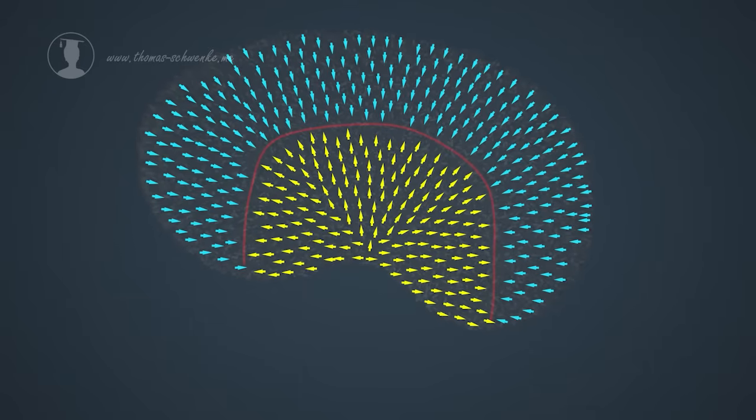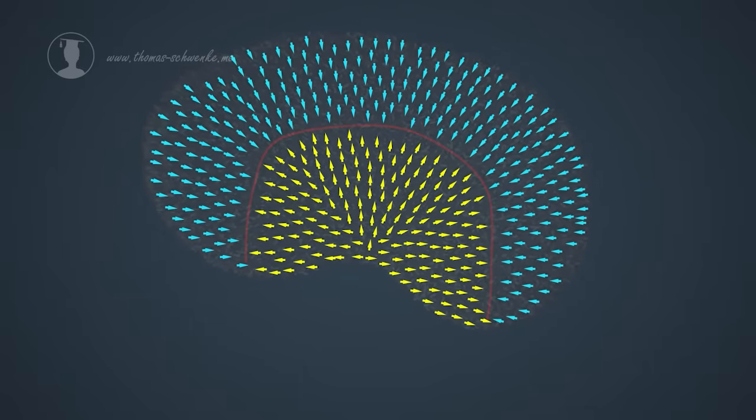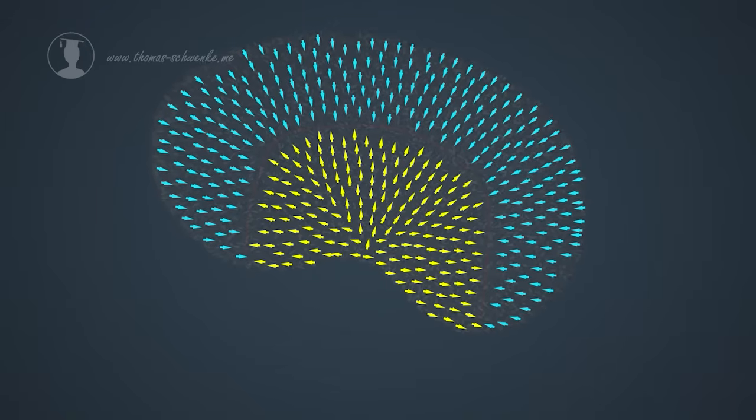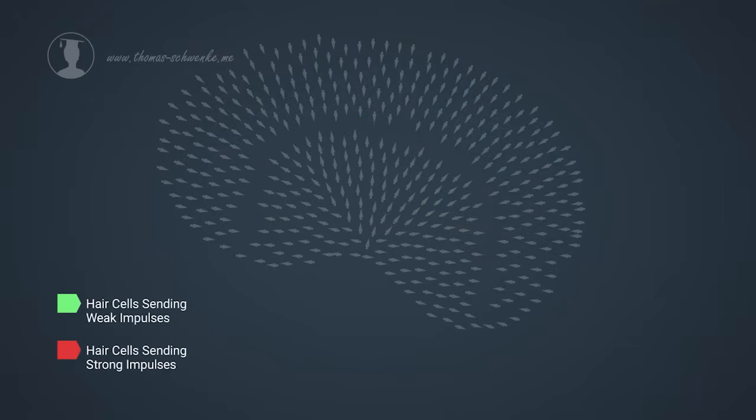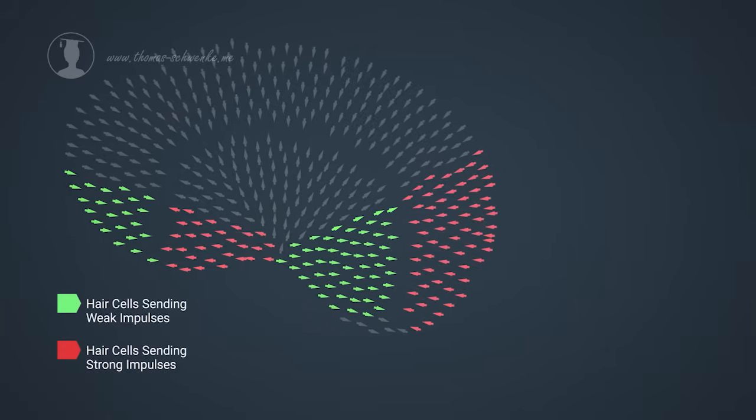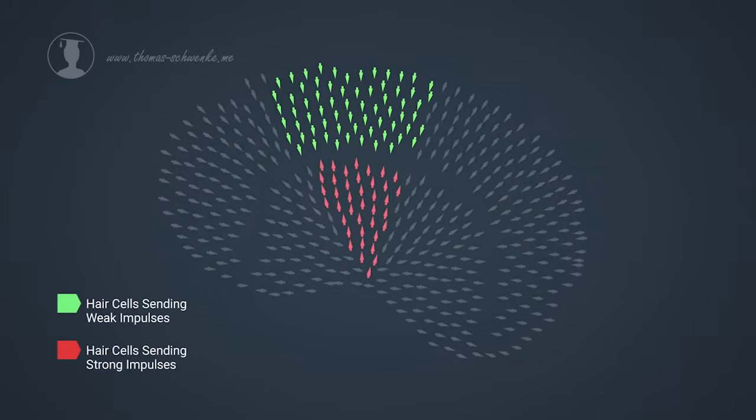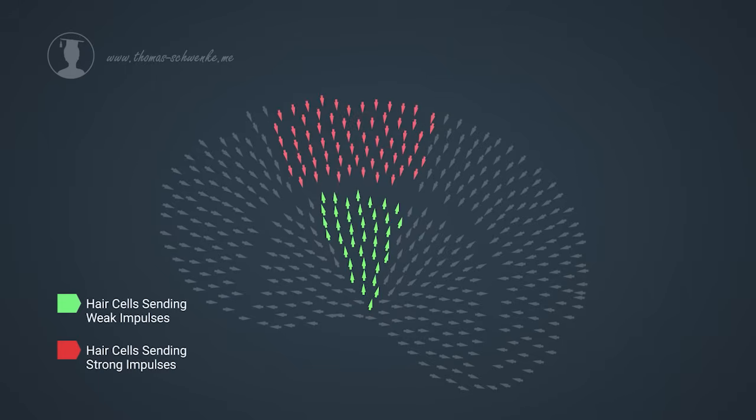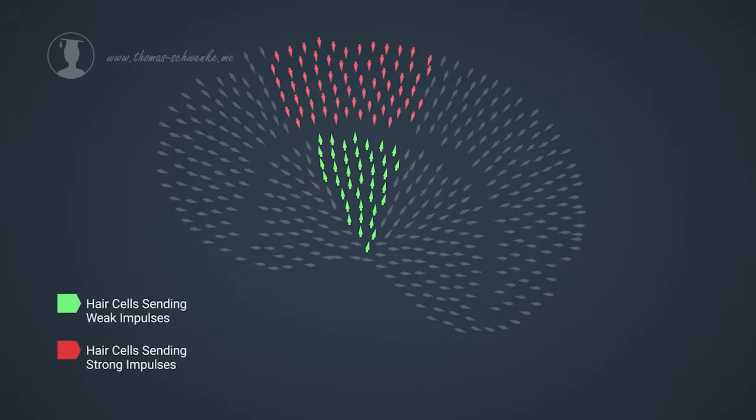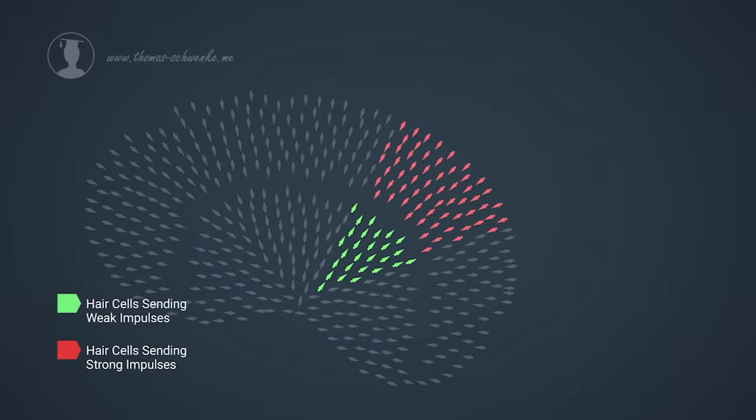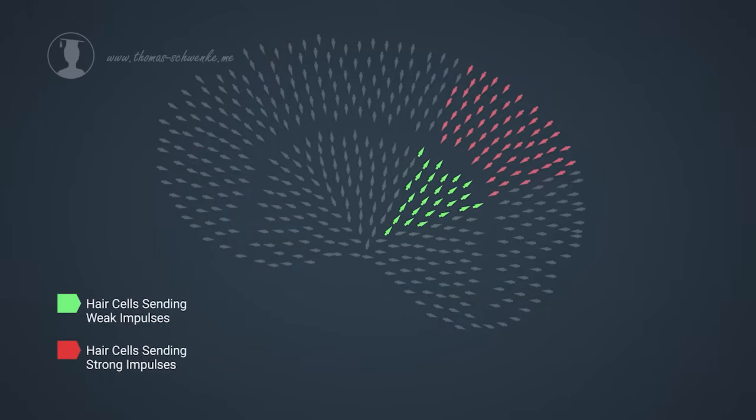When the utricle moves, only hair cells are deflected which are aligned along the direction of movement. The brain receives impulses of different intensity from these hair cells and uses them to calculate the head's acceleration or position. When the stereocilia are bent in the direction of the kinocilium, the hair cells send high-frequency impulses to the brain. However, stereocilia that are deflected in the other direction will lead to the production of low-frequency signals.